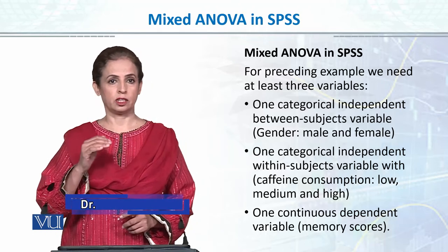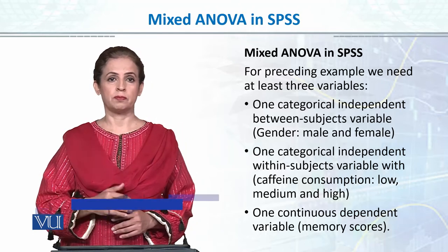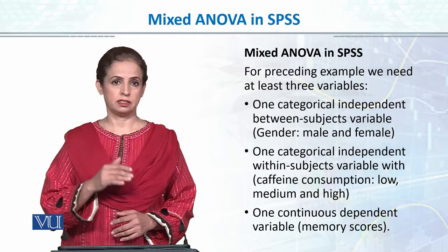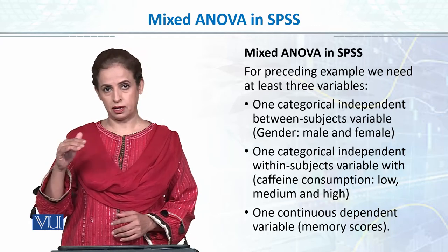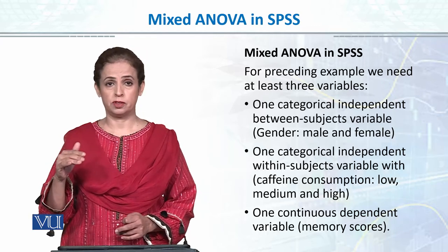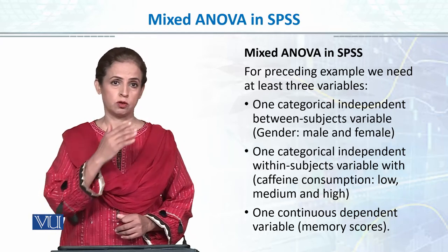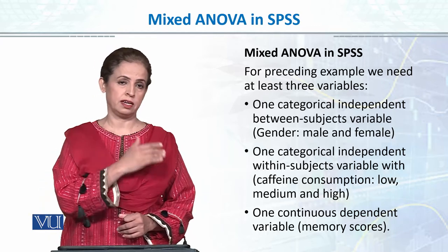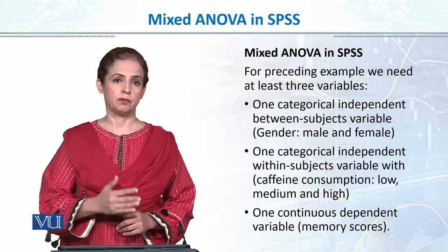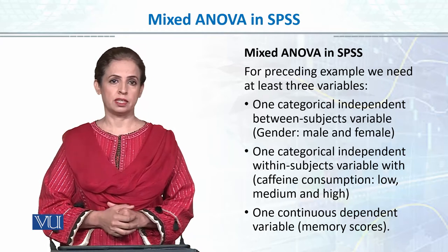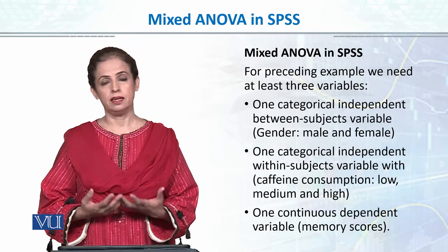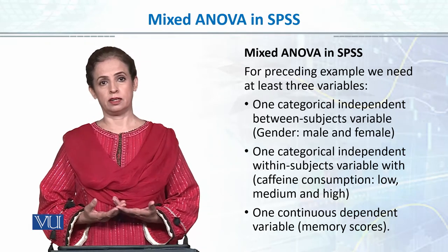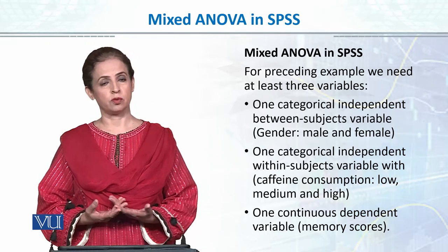Remember the table shown has 3 levels for the within-subject variable and 2 levels for the between-subject variable. The scores are essentially the dependent variable.